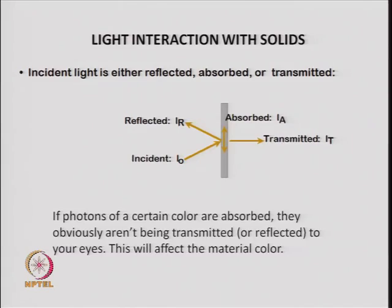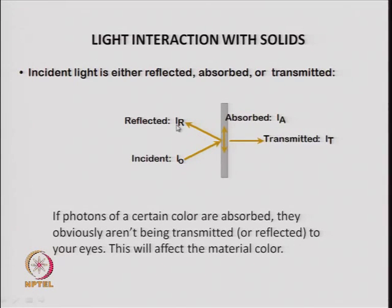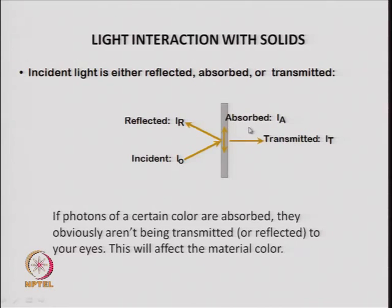We have to understand how light interacts with solids, because all optical properties involve some wavelength of radiation. When light interacts with solids it can reflect, absorb — photons, which are quanta of radiation, can be absorbed — or be transmitted. So you can have reflection, absorption, and transmission. The incident intensity I₀ equals the sum of the intensity of the reflected light, the absorbed light, and the transmitted light.